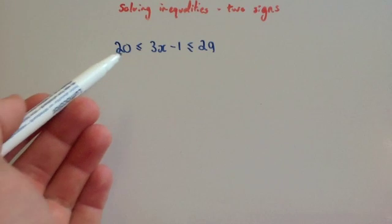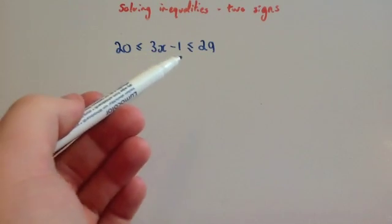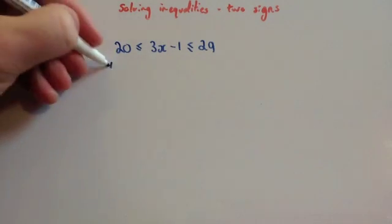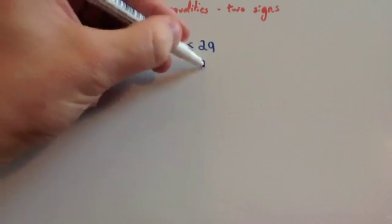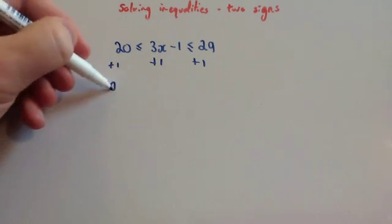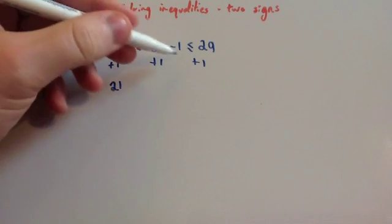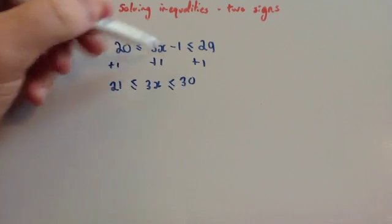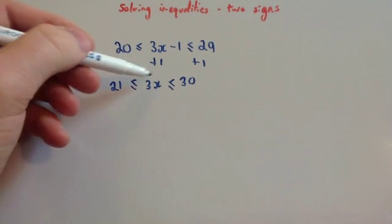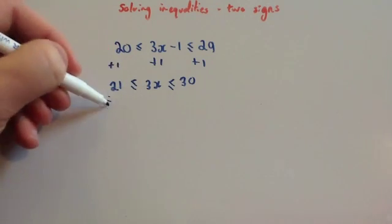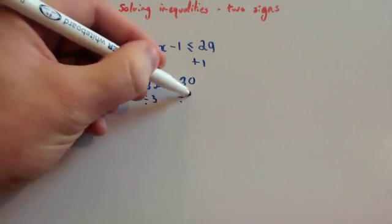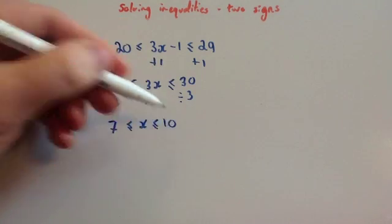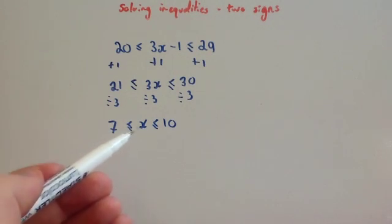This time we've been asked to solve 3x minus 1 is bigger than or equal to 20 but less than or equal to 29. You want to get x on its own, so get rid of the minus 1 first — add 1 to everything. 20 plus 1 is 21; 3x minus 1 plus 1 is just 3x; and 29 plus 1 is 30, keeping the inequality signs the same. Now divide everything by 3: 21 divided by 3 is 7, 3x divided by 3 is x, and 30 divided by 3 is 10. So x is bigger than or equal to 7 but less than or equal to 10.